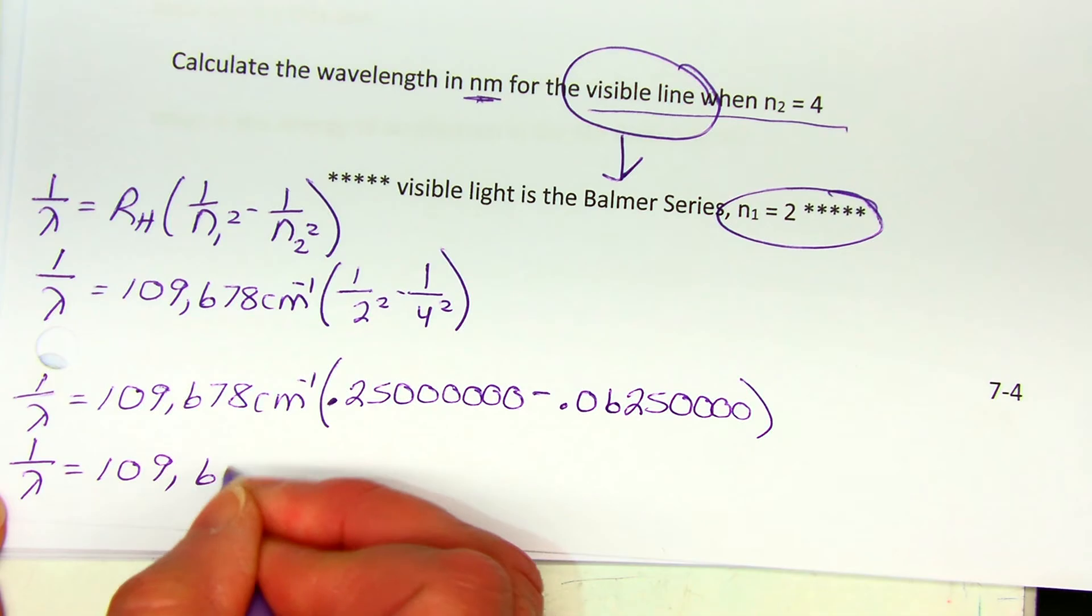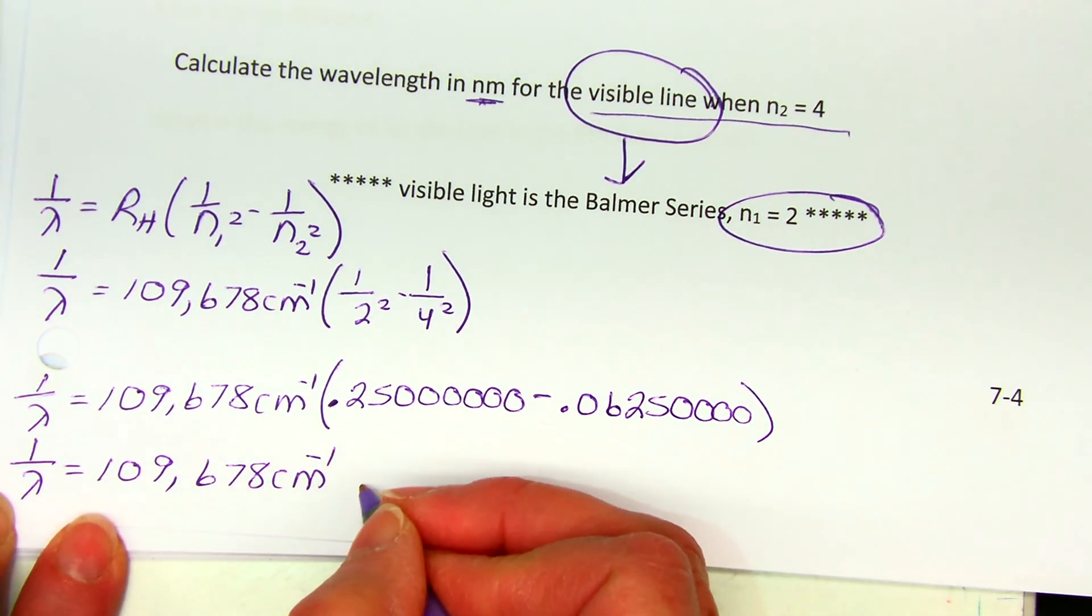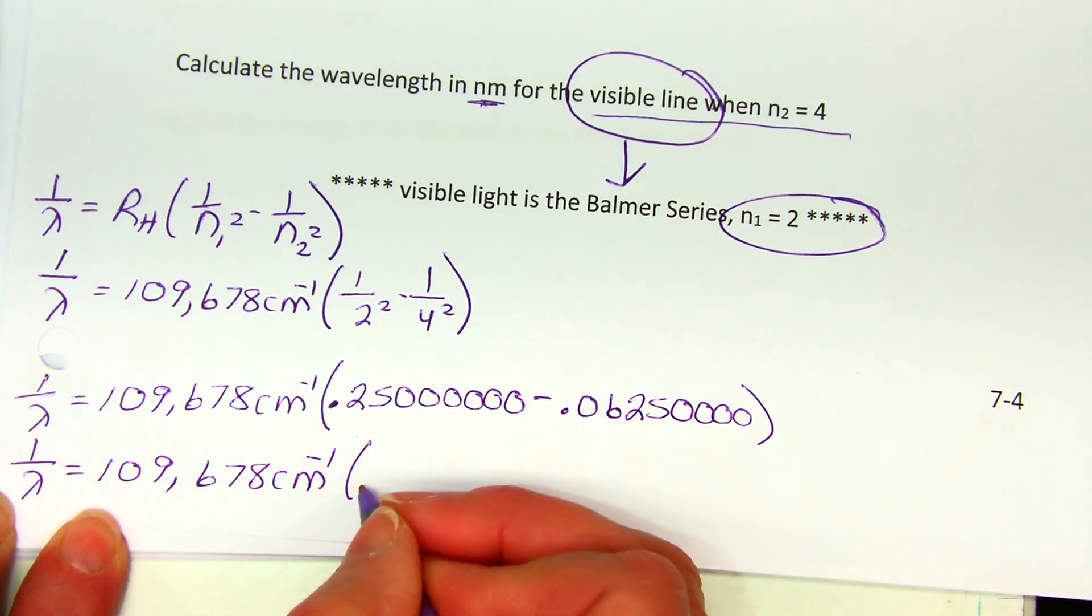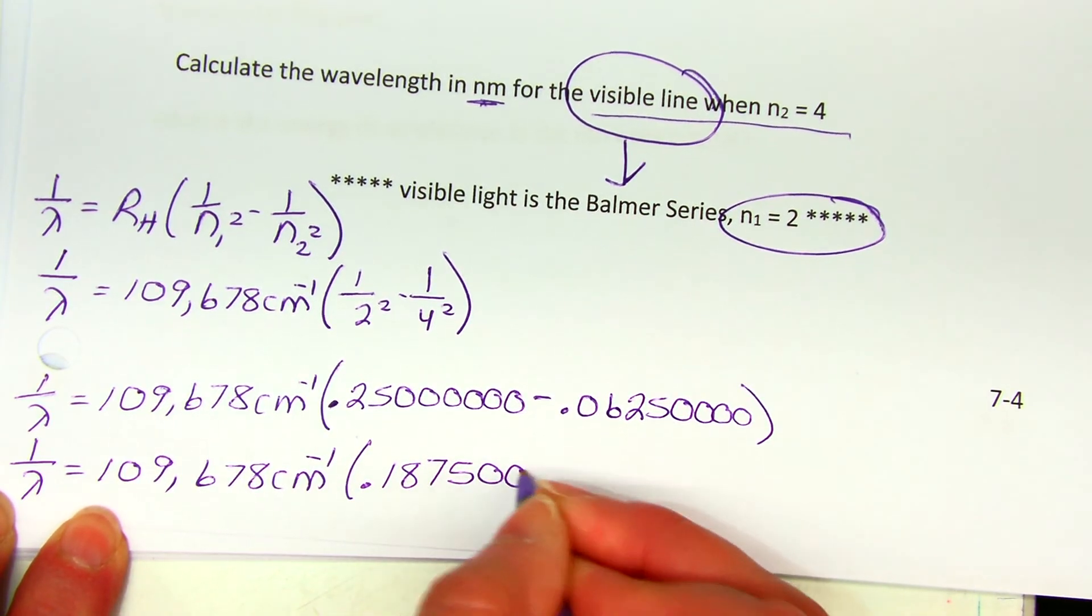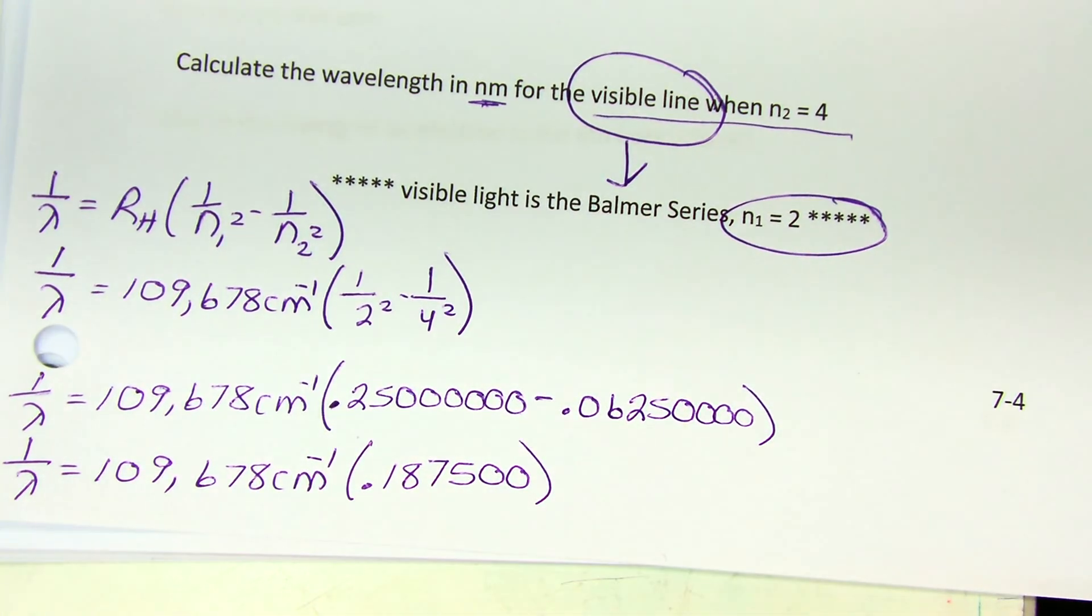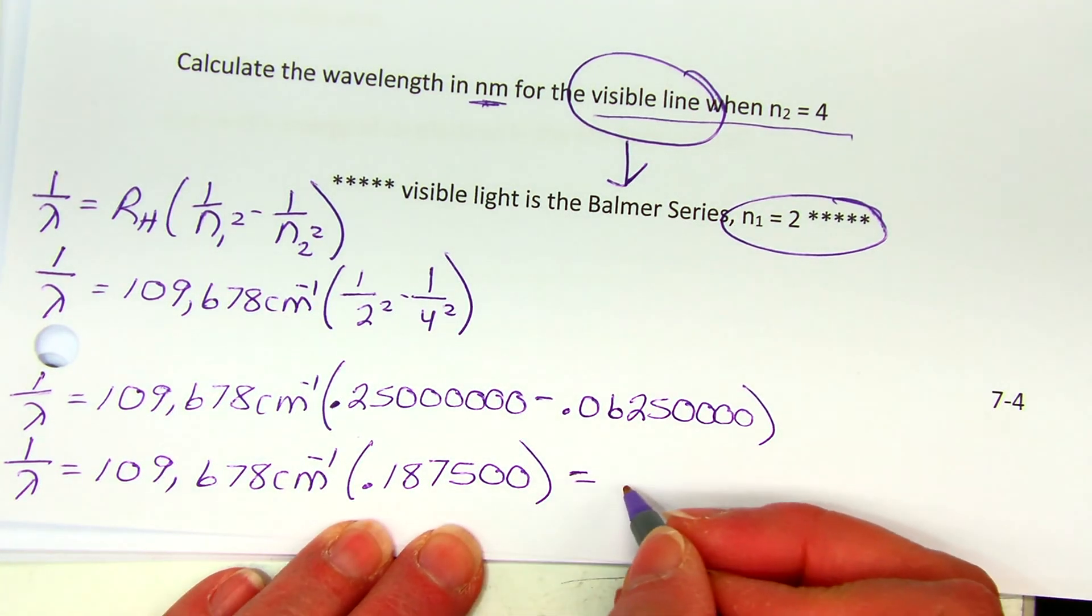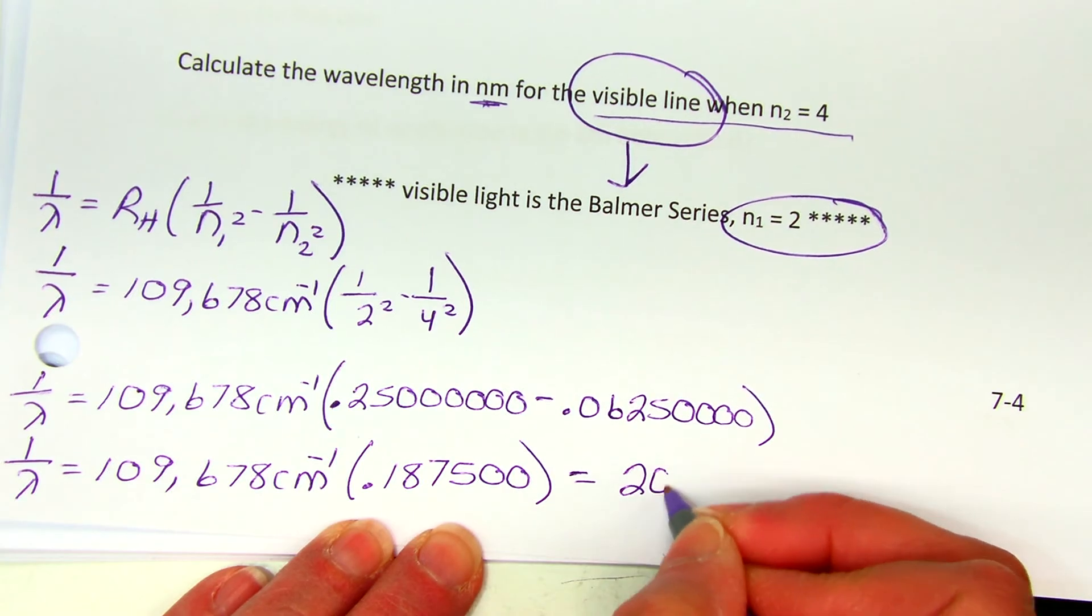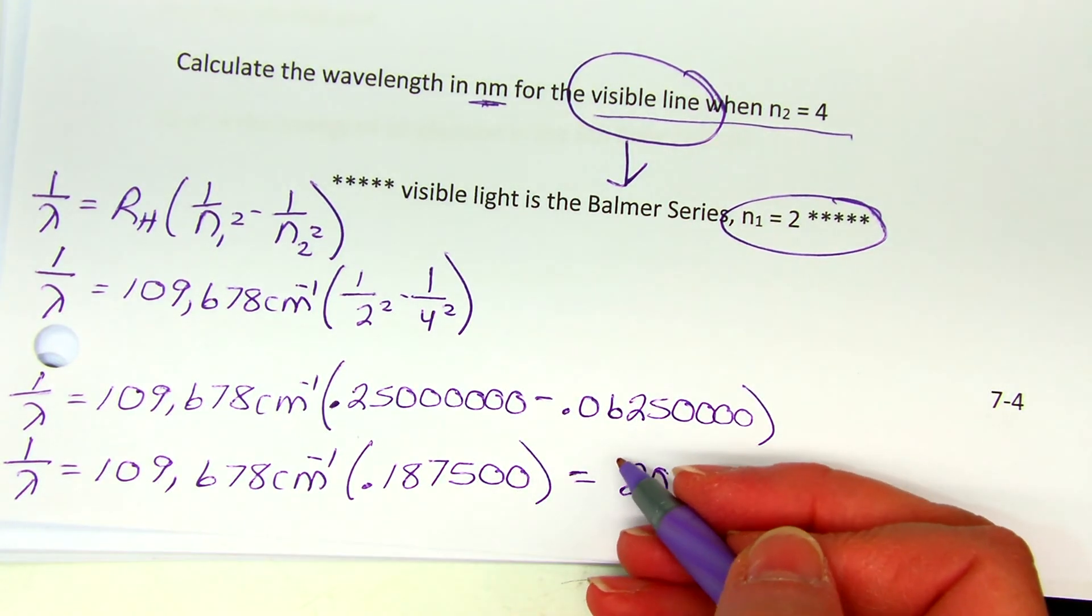So 1 over lambda is 109,678 reciprocal centimeters. When I do the subtraction, 0.187500. I keep six sig figs there so that I can multiply and have six significant figures in my answer. So I get, I just randomly added as many zeros as I felt like, so that I would have at least six when I was done.